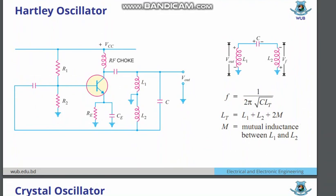In Hartley oscillator it is just the opposite. We just remove the L part and replace it with C, and replace C with L. Here you can see in the tank circuit there are two parts L1 and L2 — that means series inductors — connected in parallel with the capacitor C.